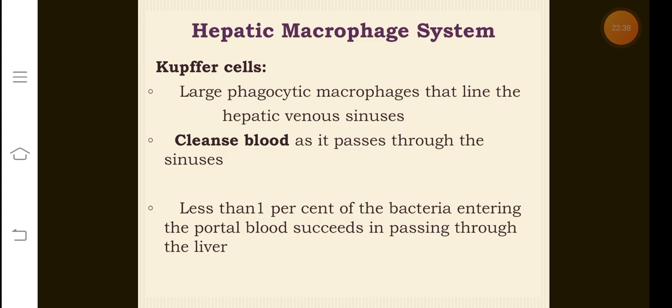Kupffer cells are large phagocytic macrophages that line the hepatic venous sinusoids. The main function of Kupffer cells is to cleanse the blood as it passes through the sinusoids. Less than one percent of bacteria entering the portal blood pass through these Kupffer cells.